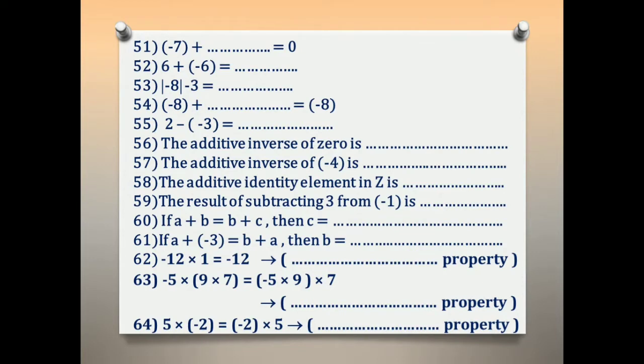Number 51: negative 7 plus blank equals 0. What number, if added to negative 7, gives 0? It is the inverse. The inverse of negative 7 is 7.